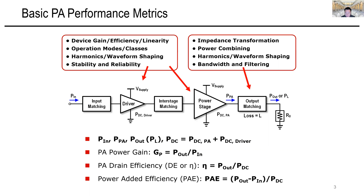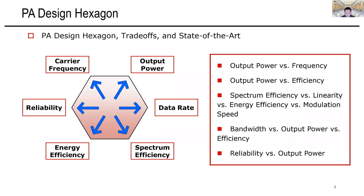The passive network designs will handle impedance transformation, power combining, waveform shaping, and the bandwidth filtering performance of the PA. We will delve deeper into these two areas in this talk. We will explore a wide variety of fundamental trade-offs in PA designs. A PA design hexagon can be used to highlight these trade-offs and the resulting multi-dimensional optimization required in any PA design.